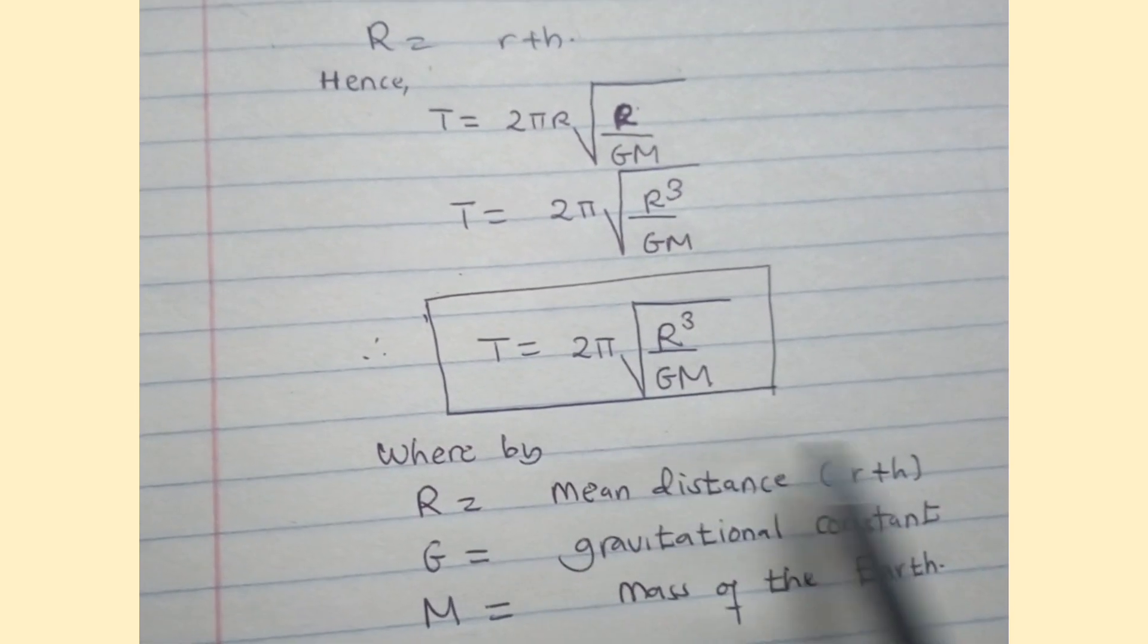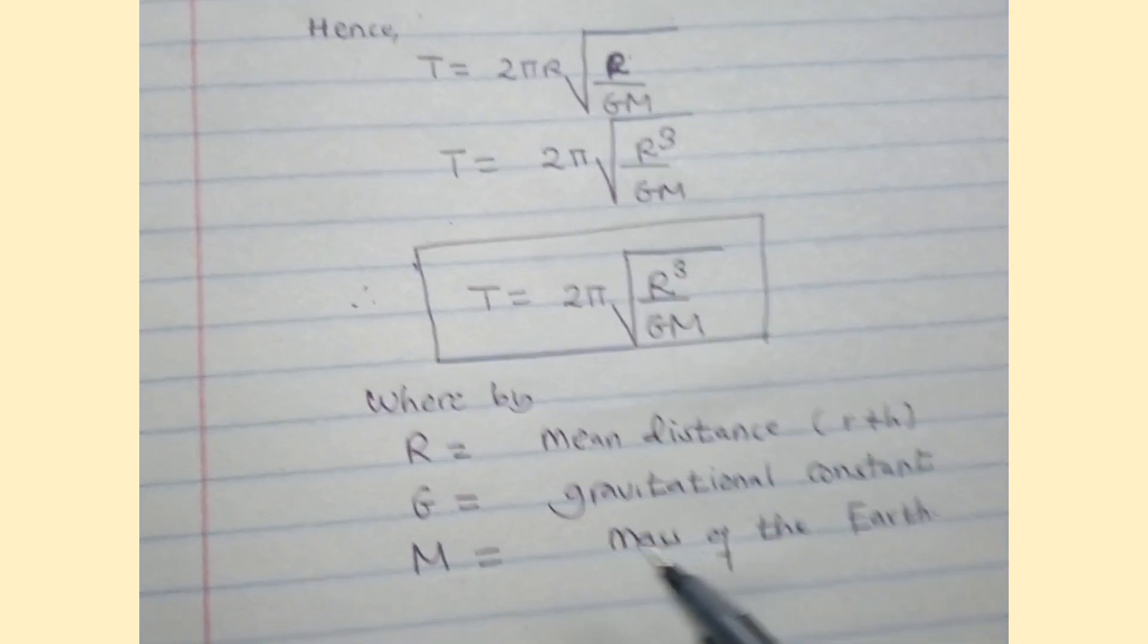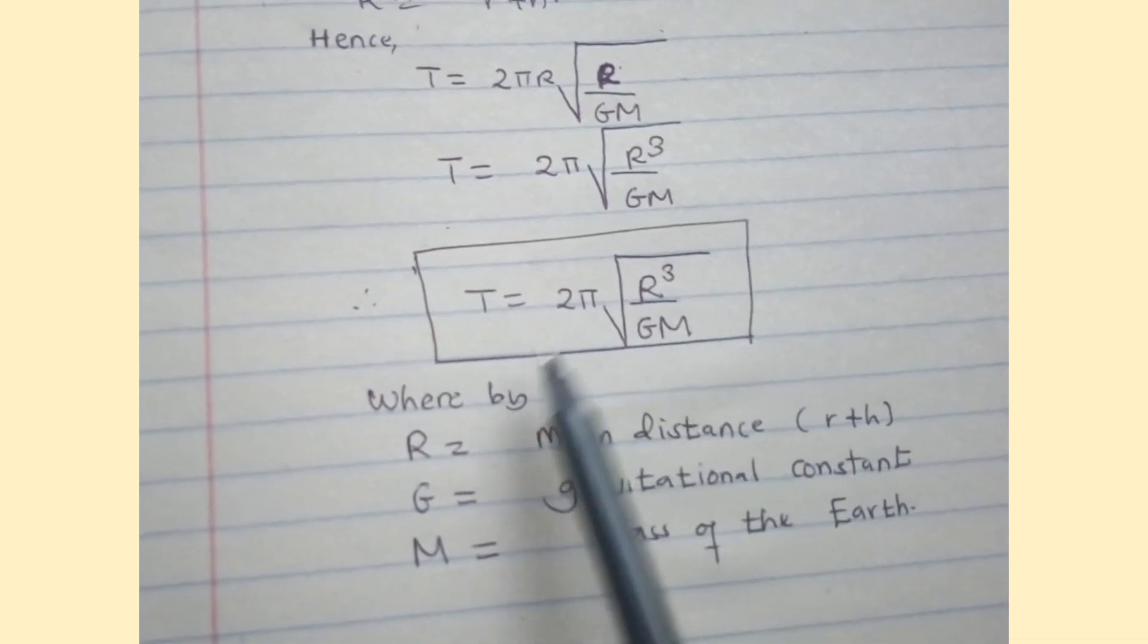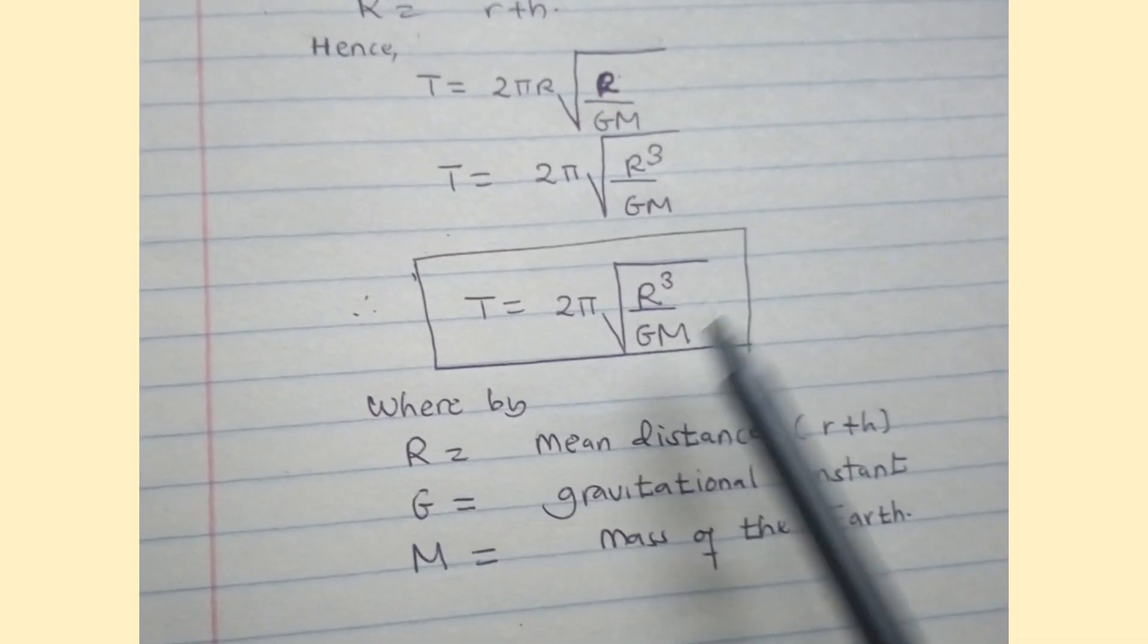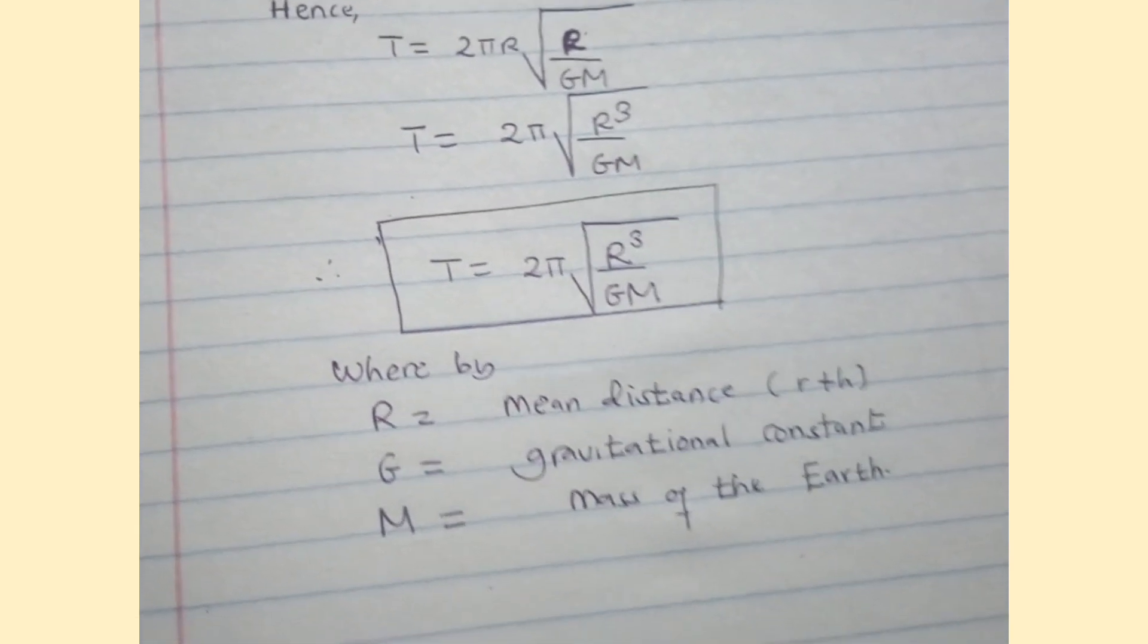This equation is the equation for the time period of the satellite. Next I will upload case number three for different forms of this equation and the orbital velocity of the satellite. Thank you.